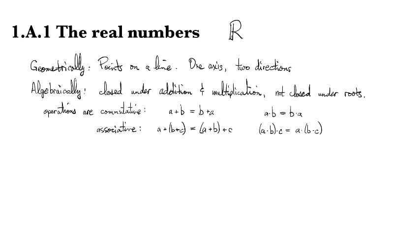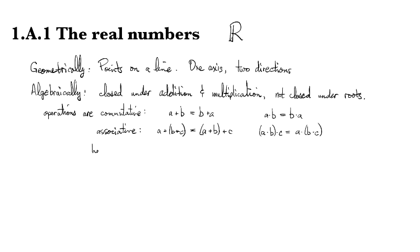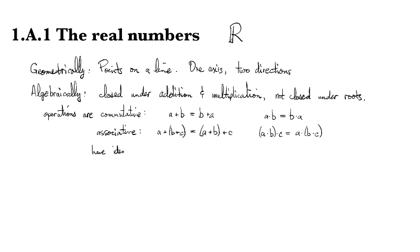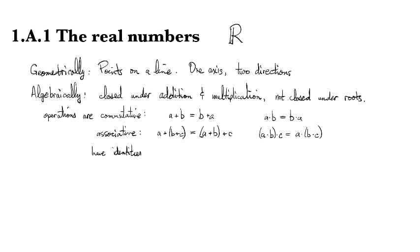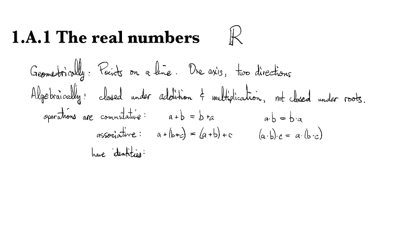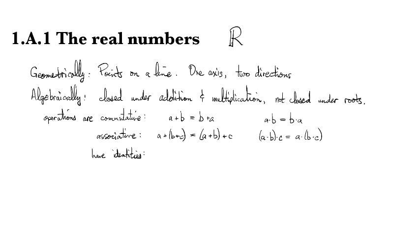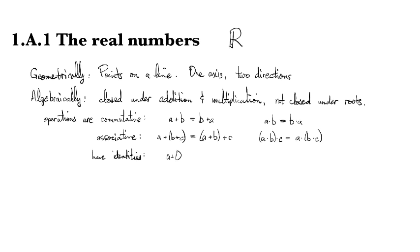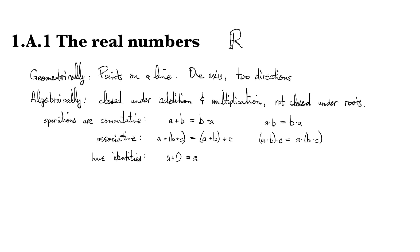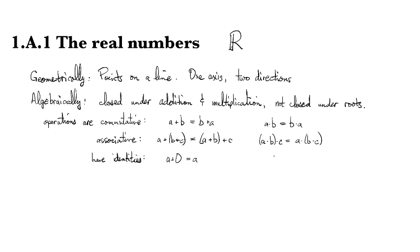We also know that we've got identities for each of these operations. For addition there's a special element called zero, and if we add anything to zero nothing happens. For multiplication there's a special element called one, and if we multiply anything with one nothing happens.